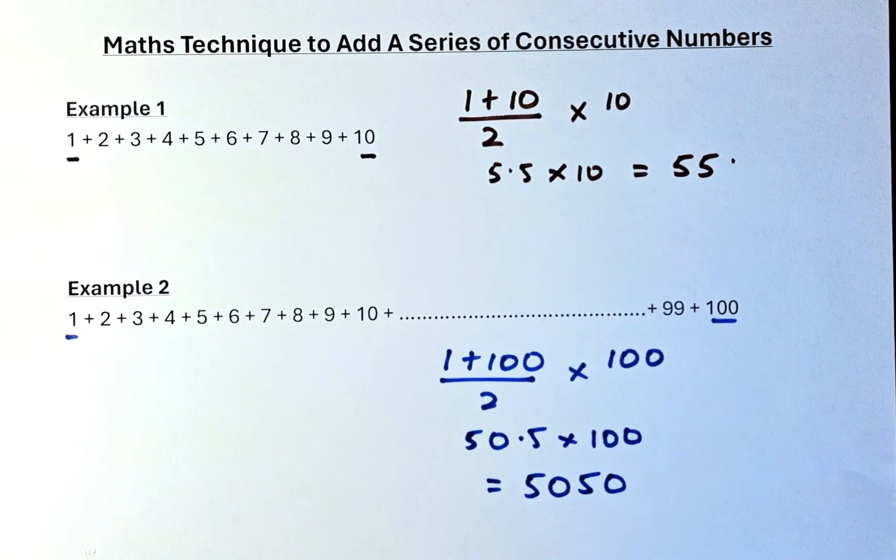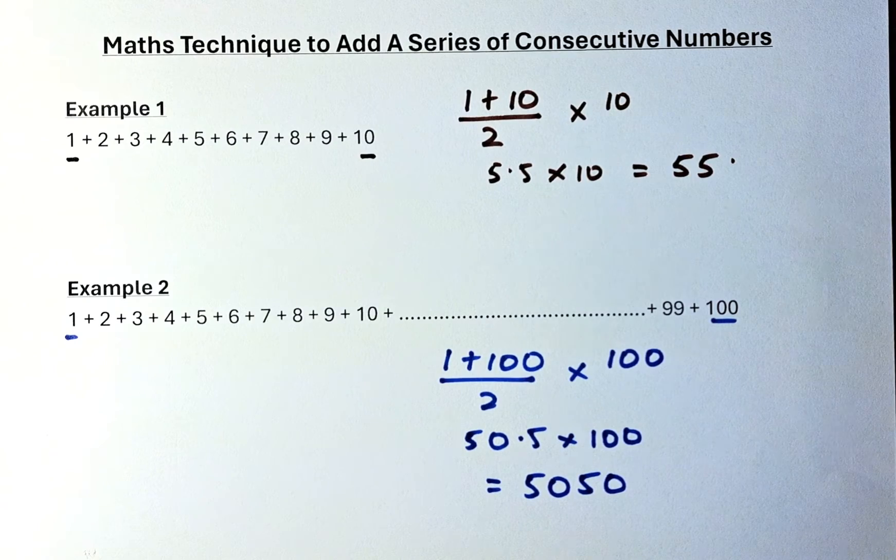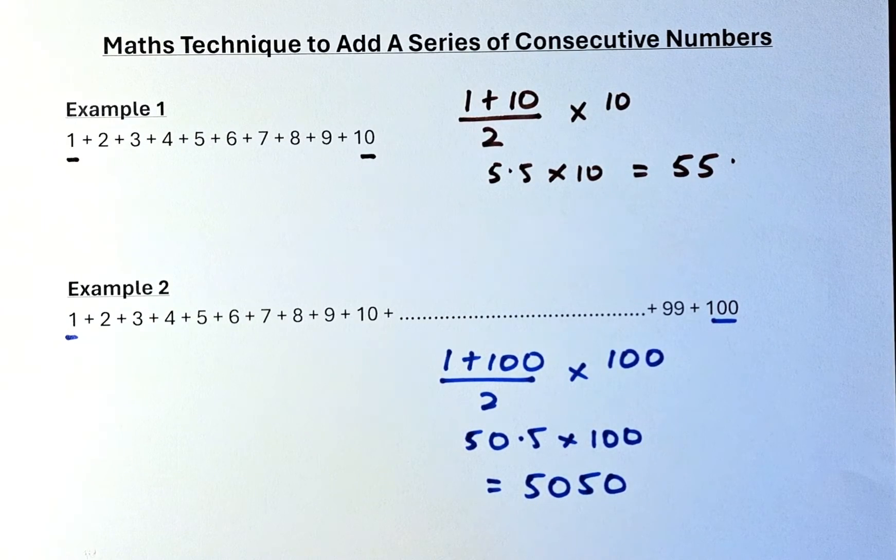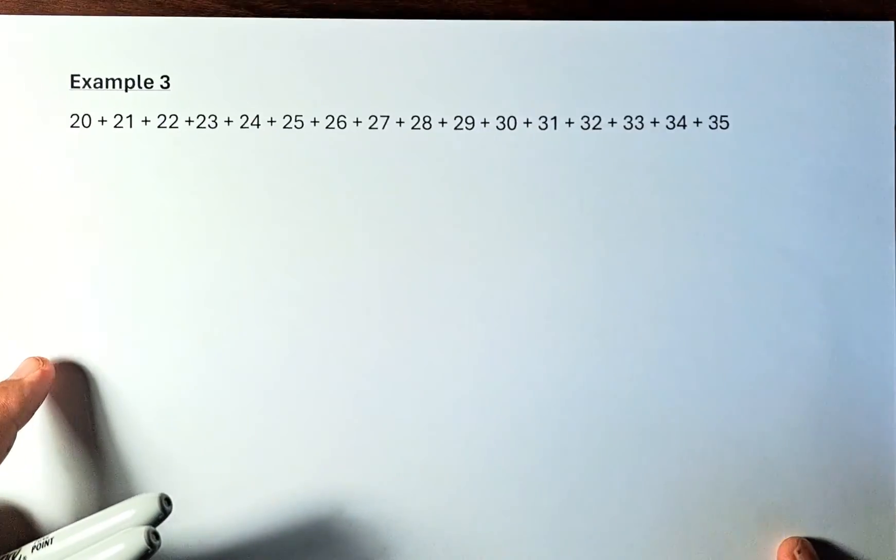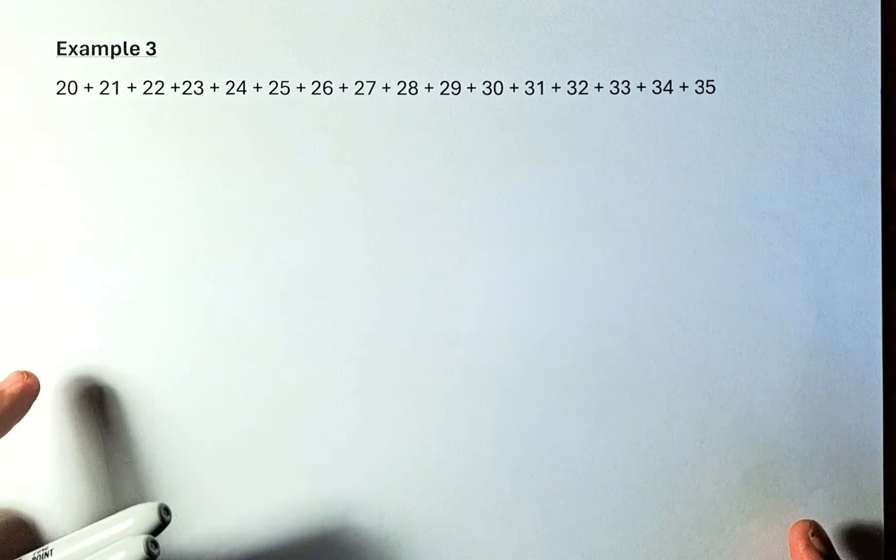If you have a sum of numbers from a certain number to another number, just do this method. First number plus last number divided by 2 and multiply by total number of numbers in that sequence. Last but not least,